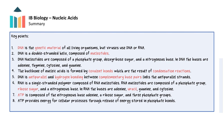The following key points were covered in this video: DNA is the genetic material of all living organisms, but viruses use DNA or RNA. DNA is a double-stranded helix composed of nucleotides, with each nucleotide composed of a phosphate group, deoxyribose sugar, and a nitrogenous base. In DNA, the bases are adenine, thymine, cytosine, and guanine. The backbone of nucleic acids is formed by covalent bonds through condensation reactions. DNA is antiparallel, and hydrogen bonding between complementary base pairs links the antiparallel strands. RNA is a single-stranded polymer composed of RNA nucleotides with a phosphate group, ribose sugar, and a nitrogenous base. In RNA, the bases are adenine, uracil, guanine, and cytosine. ATP is composed of the nitrogenous base adenine, a ribose sugar, and three phosphate groups, and provides energy for cellular processes through the release of energy stored in phosphate bonds.